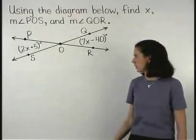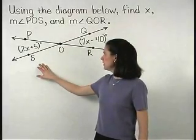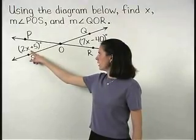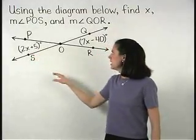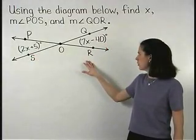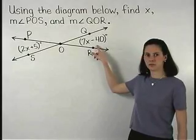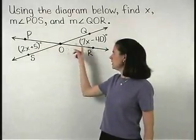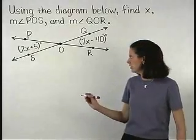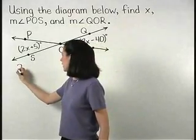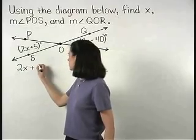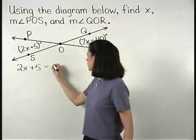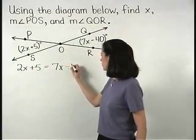Since our diagram tells us that the measure of angle POS is 2x plus 5 and the measure of angle QOR is 7x minus 40, and we know that these angle measures are equal, we can set up the equation 2x plus 5 equals 7x minus 40.